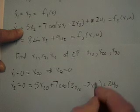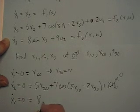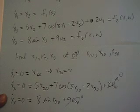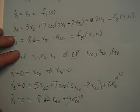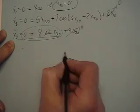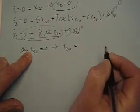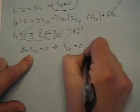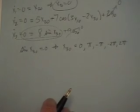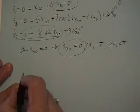We already have x2_0 equals zero. The x3 equation says 8 sine(x3_0) equals zero, so sine(x3_0) equals zero. That means x3_0 can be zero, pi, negative pi, 2pi, and so forth. Since we want the equilibrium point closest to the origin, we pick x3_0 equals zero.